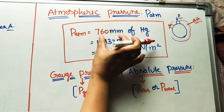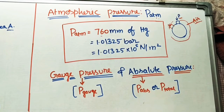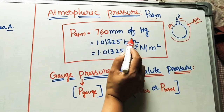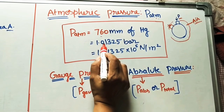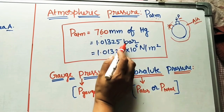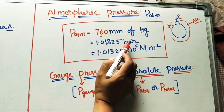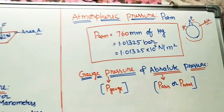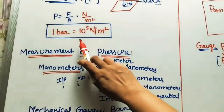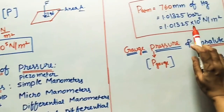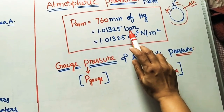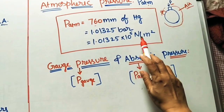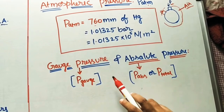Atmospheric pressure has a constant value of 760 mm of Hg — determined by the height of a mercury column. In terms of bar, this value is 1.01325 bar. Since one bar equals 10⁵ Newton per meter squared, the atmospheric pressure can also be written as 1.01325 × 10⁵ Newton per meter squared.